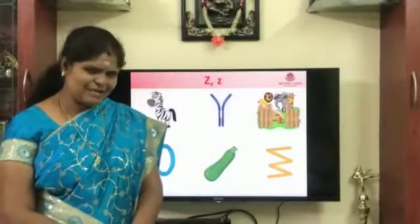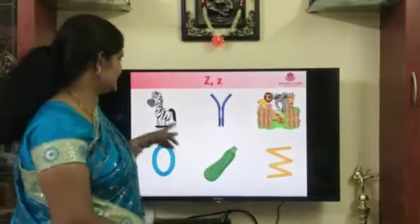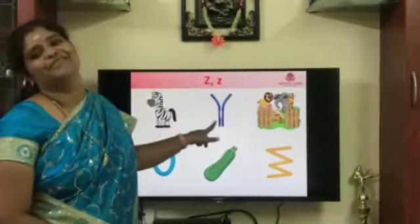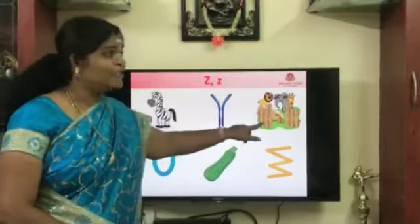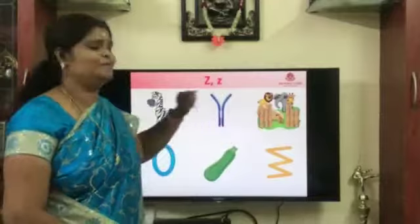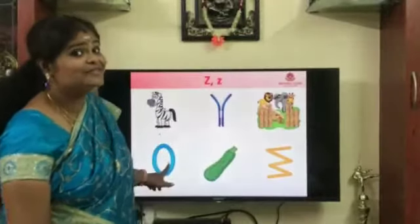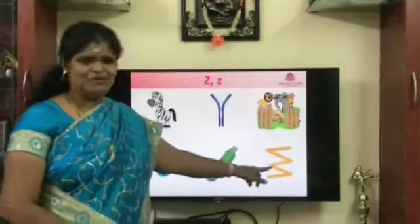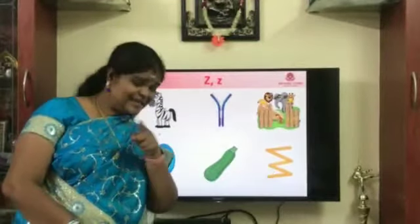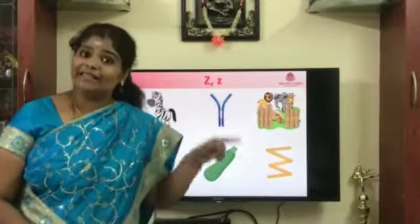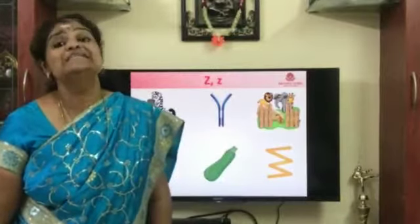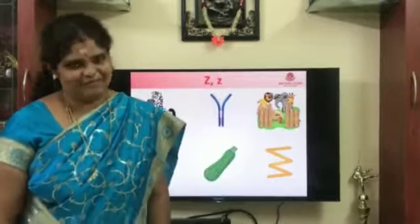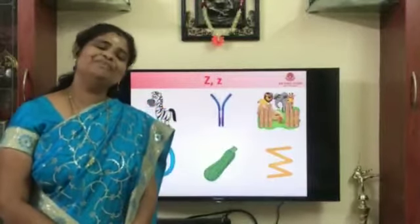Can we recollect the objects which we saw now? Come on, tell. Zebra. Zebra. Zipper. Zoo. Zero. Zucchini. What is it? Zigzag. So all of these begin with the letter Z and make the sound Z. Will you remember this, children? Thank you.